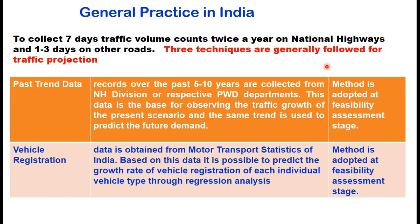The general practice adopted in India is to collect 7-day traffic counts twice a year on national highways and 1 to 3 days on other roads. Records over the past 5 to 10 years are collected from the NH division or respective PWD departments. This data serves as the base for observing traffic growth in the present scenario, and the same trend is used to predict future demand. This method is generally adopted at the feasibility assessment stage.